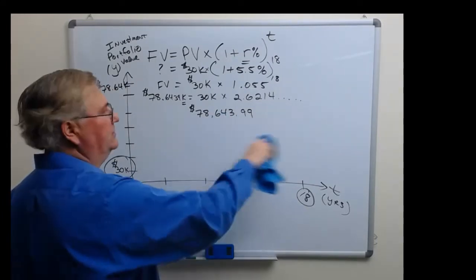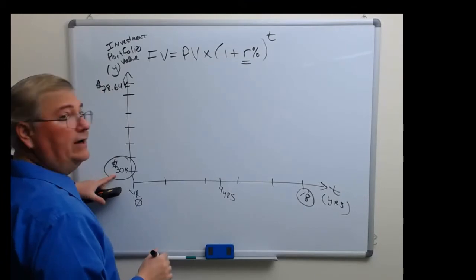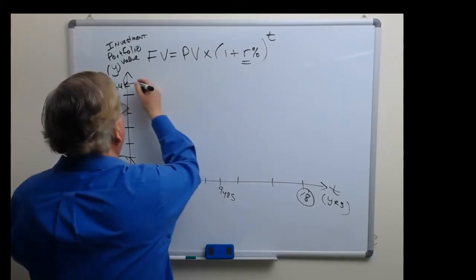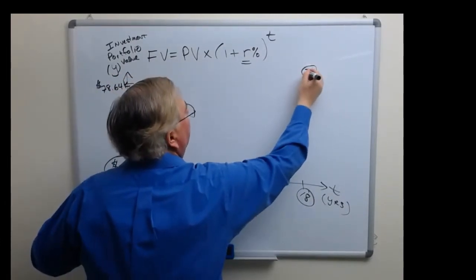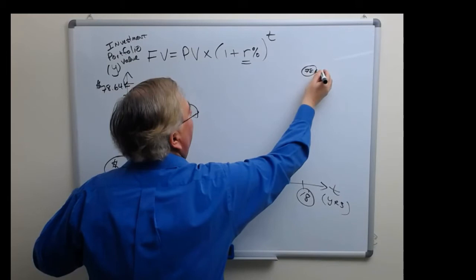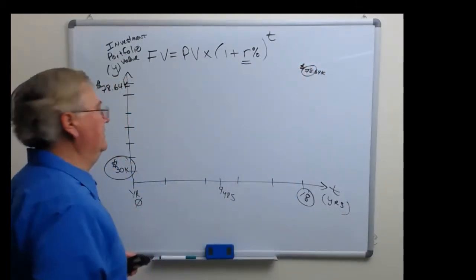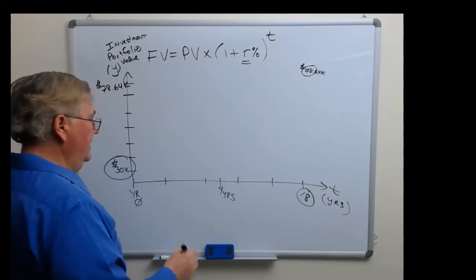Let me erase this so I can show you graphically what I'm trying to get at here. So we said that we started out with thirty thousand dollars in year zero and we end up with 78.64k in eighteen years from now. And that's an incredible growth as you can imagine.